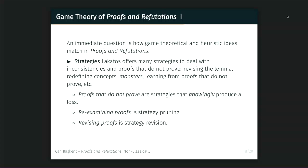These are essentially the strategies that knowing produce a loss — because there's some benefit in it. If you have a proof that does not prove and you think it is useful for your epistemology, then you're not producing a loss. This loss, on the other hand, if you're a dialetheist, may also bring you some win in some other game or strategy. For example, you can re-examine the proof — that corresponds to strategy pruning. You have a very broad strategy and you narrow it down to obtain a more concrete result, perhaps even a higher payoff.